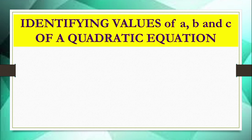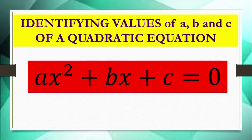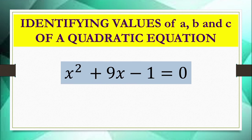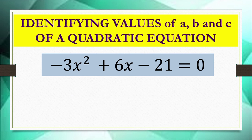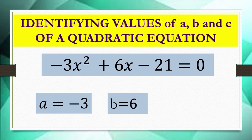Let's also identify the values of a, b, and c in the form ax² plus bx plus c equals 0 — the standard form. For x² plus 9x minus 1 equals 0: a is 1, b is 9, and c is negative 1. For negative 3x² plus 6x minus 21 equals 0: a is negative 3, b is 6, and c is negative 21.